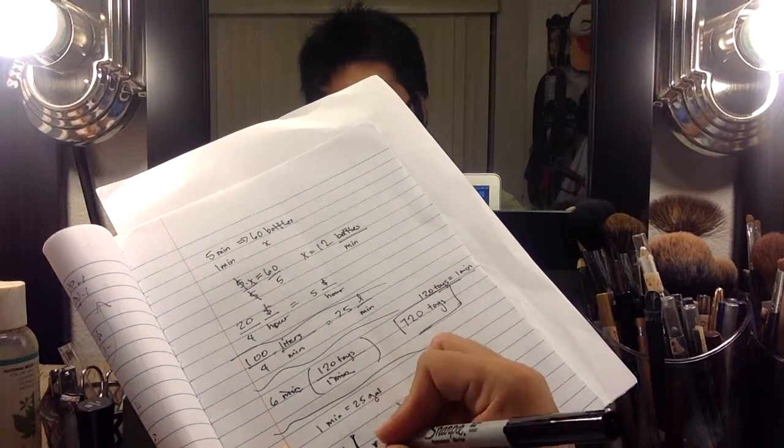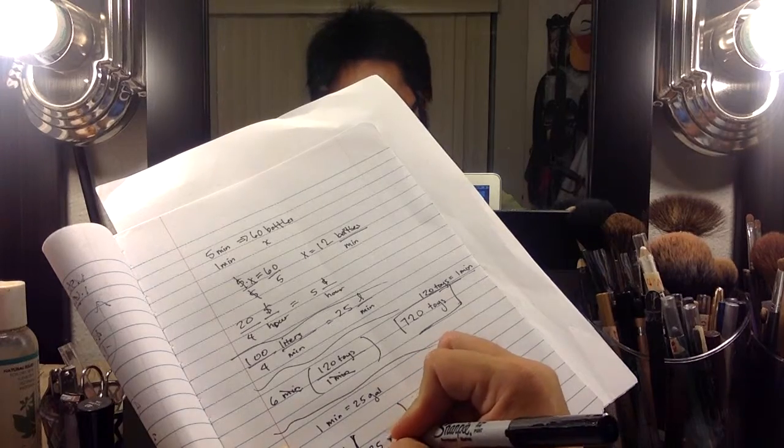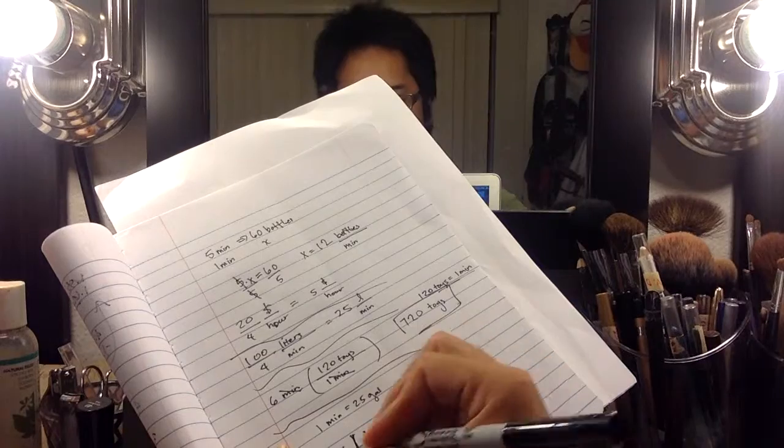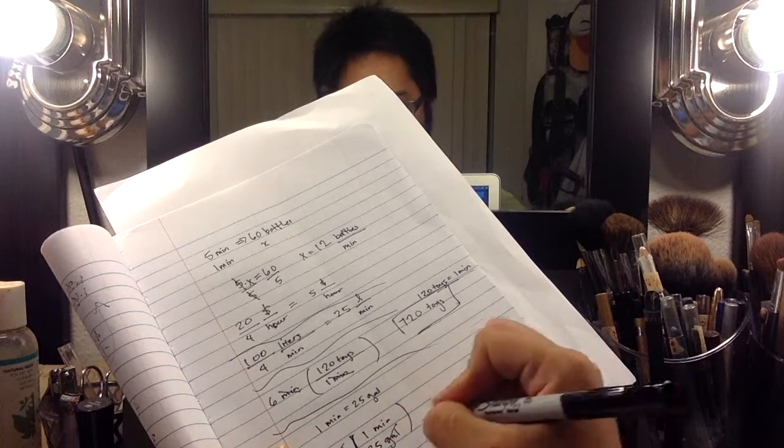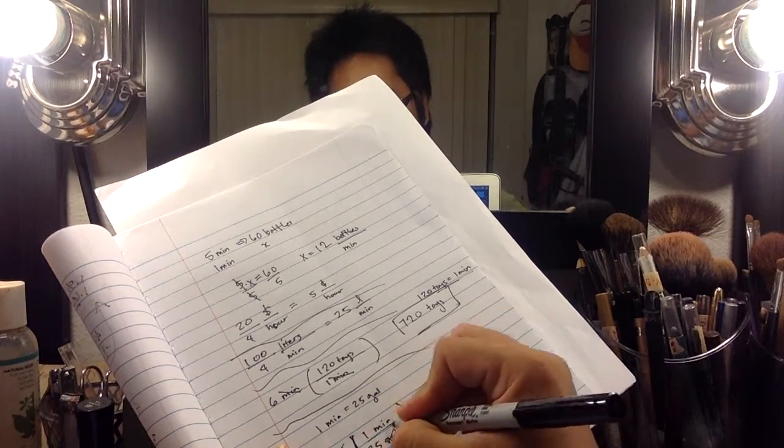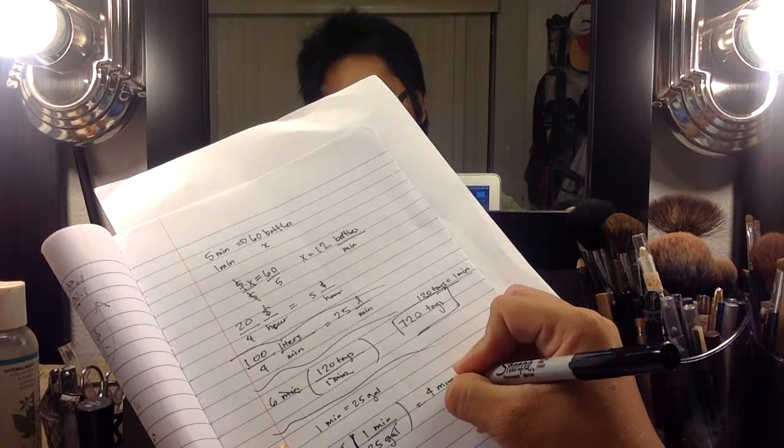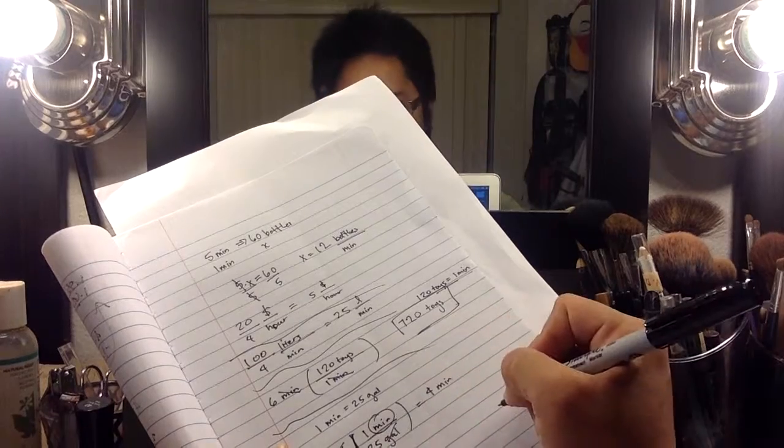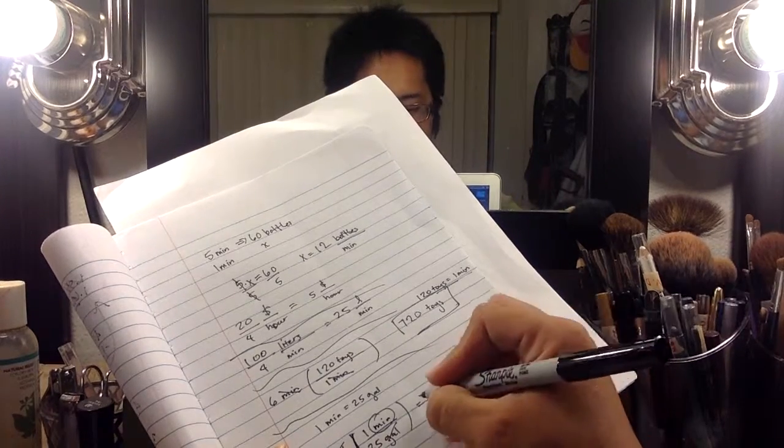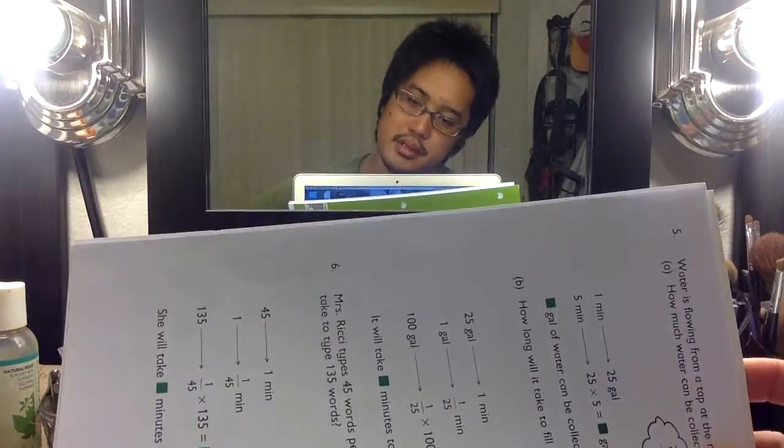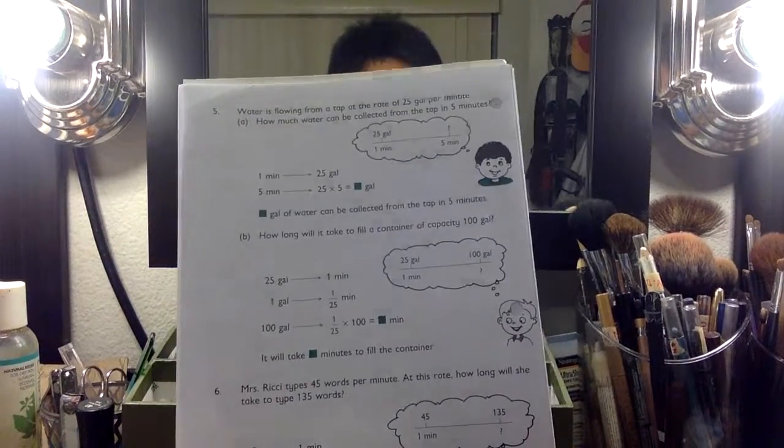have, and I'll put the gallons on the bottom and the minutes on top. The reason for that is because I want this gallons to cancel out with that gallons. 100 divided by 25 is simply four, so my answer is four minutes because I have that unit left over. Four minutes, done. All right, Miss Rica types 45 words